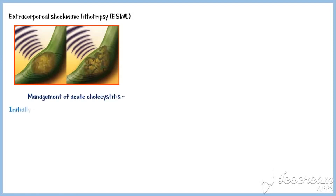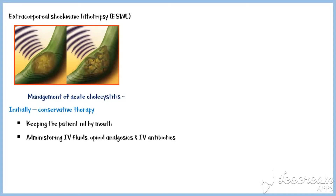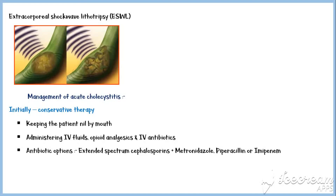Acute cholecystitis should be managed initially with conservative therapy. This includes keeping the patient nil by mouth while administering intravenous fluids, opioid analgesics, and intravenous antibiotics. Effective antibiotic options include extended-spectrum cephalosporins along with metronidazole, and piperacillin or imipenem. These antibiotic options may vary depending on the geographic region, and it would be better to refer to local guidelines for the management of acute cholecystitis. Cholecystectomy is usually delayed to allow the symptoms to settle.